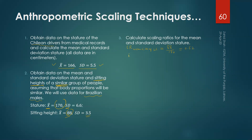Similarly, we calculate the scaling ratio for standard deviation of sitting height: 3.5 divided by the standard deviation of stature, which is 6.6, giving a scaling ratio of approximately 0.53. We have now calculated both scaling ratios from the known population, that is the Brazilian population.